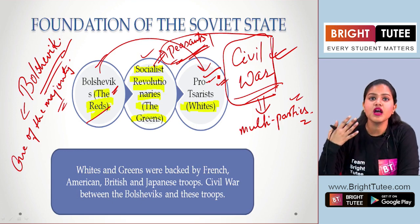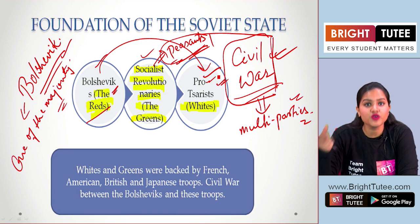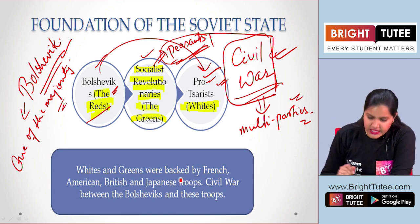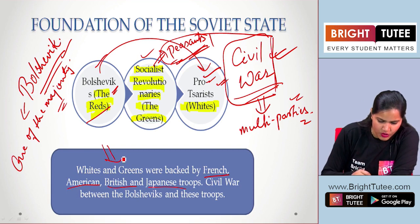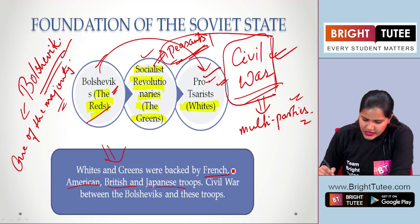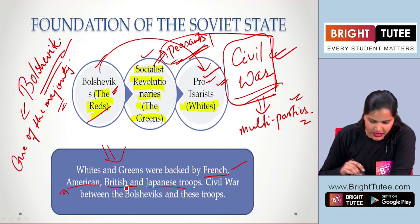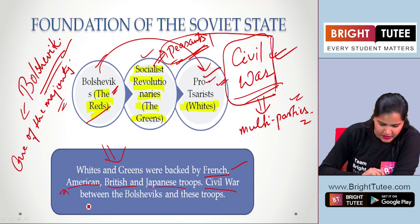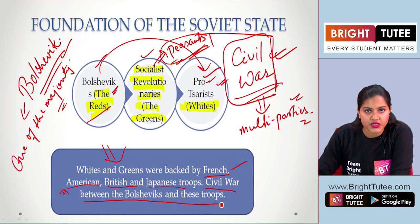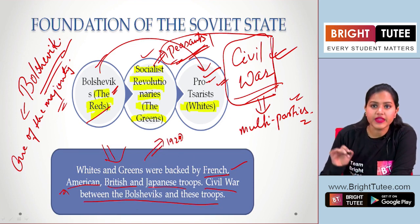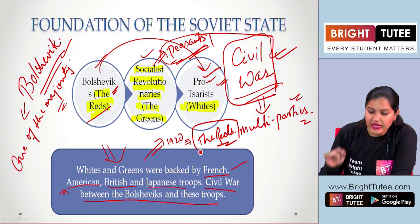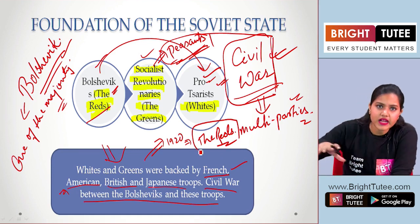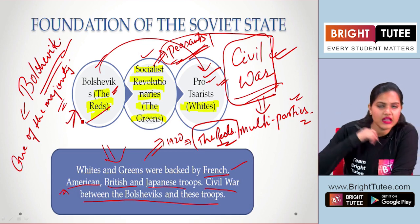The Whites and Greens were backed by foreign nationalities such as French, American, British, and Japanese troops. Everyone was trying to get some hold of power. The civil war took place between the Bolsheviks and these troops. By 1920, the victorious group was the Reds — obviously. Lenin got hold of the government, and complete control was under the Bolsheviks under the rule of Lenin.